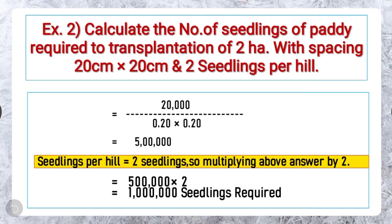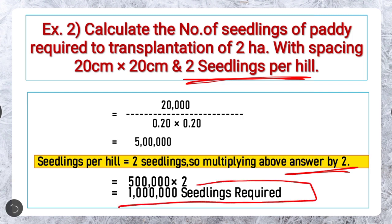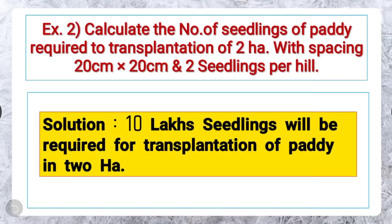In this example, another condition is given: 2 seedlings per hill. Then multiplying the above answer by 2, the plant population in 2 hectares will be 5 lakhs × 2 equals 10 lakhs. The solution of the problem is 10 lakhs seedlings will be required for paddy in 2 hectares.